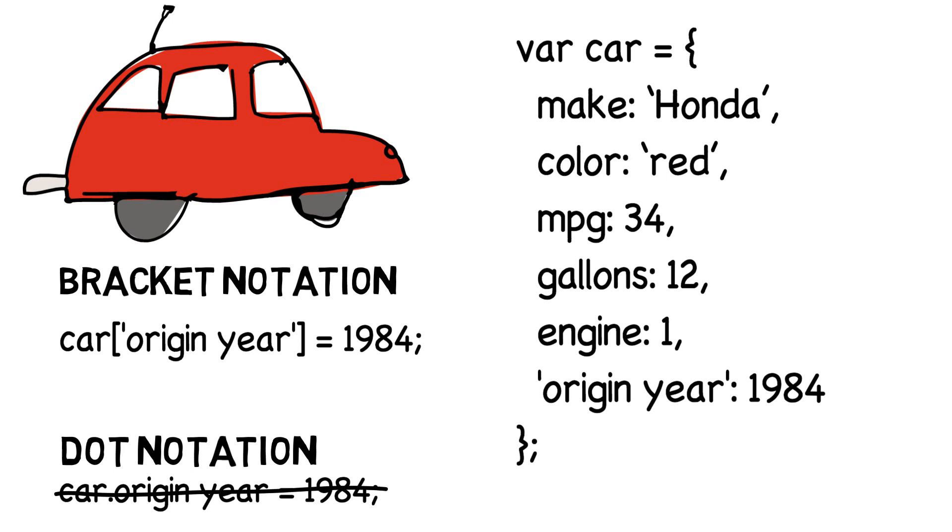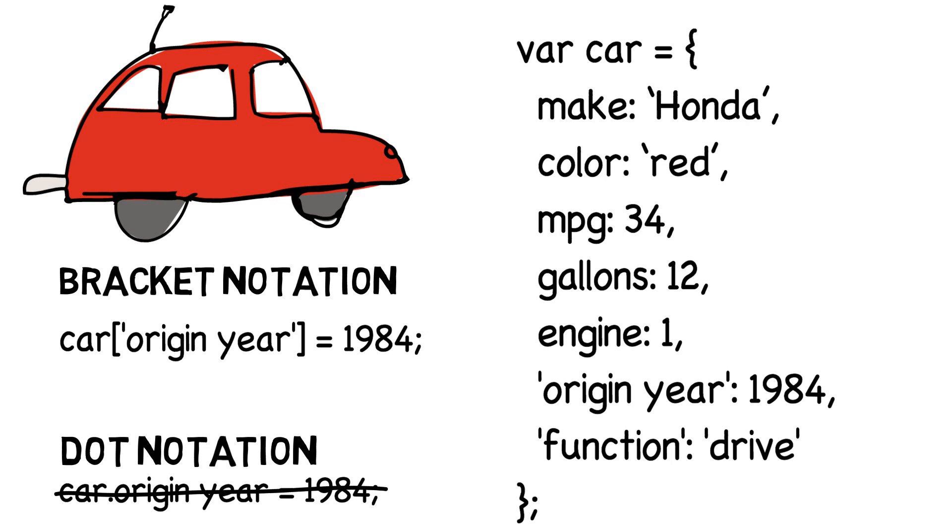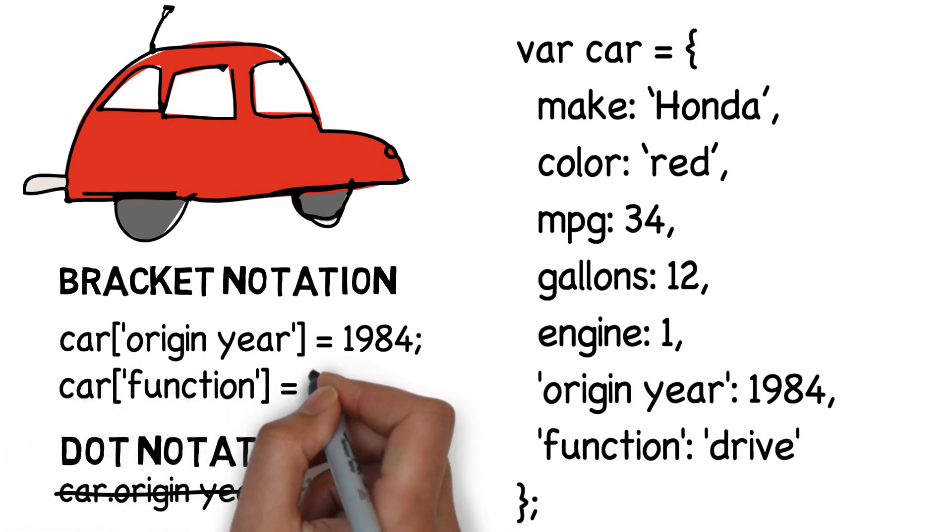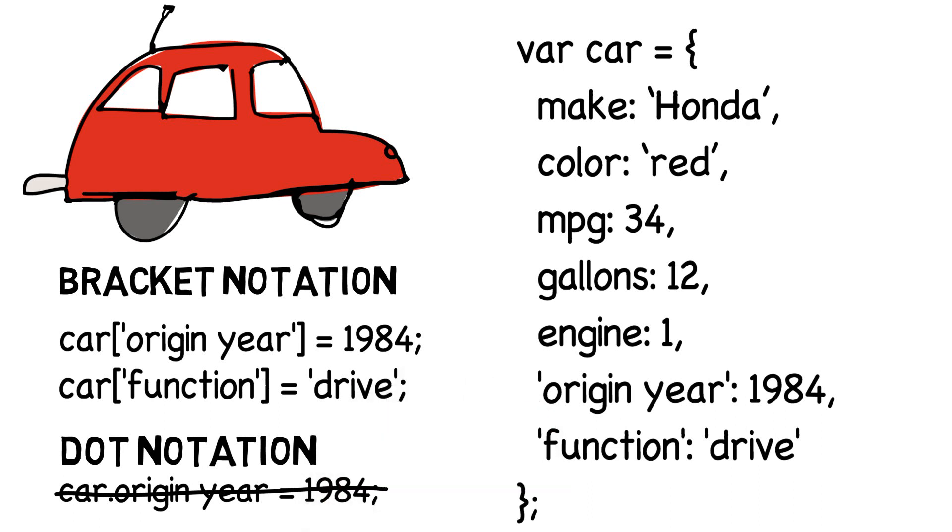Let's add another property and value to our car using an invalid variable name. Car property function equals drive. We have to put quotes around the property name function because this is a JavaScript reserved keyword that would normally be an invalid variable. And then we have given it the value of the string drive.